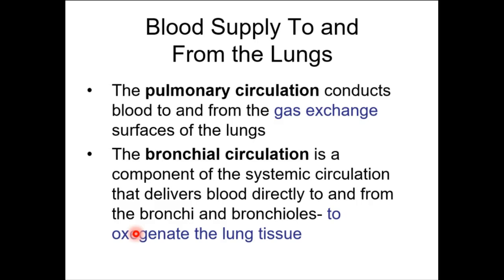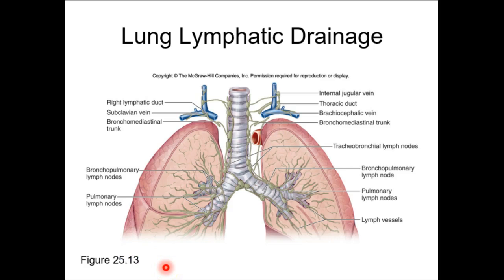There's quite a lot of lymphatic drainage around the lungs. In my cadaver lab, we saw black, gross lymph nodes right around that carina and along the bronchial tree. That's one of the most obvious things — we could tell if somebody lived in the city or was a smoker based on the color of those lymph nodes. Even just living in the city, these turn black over your lifetime.